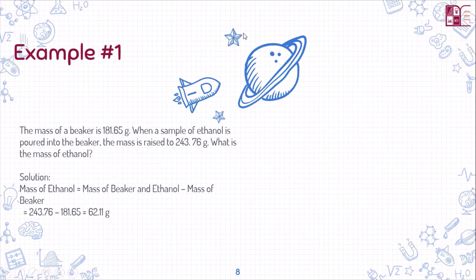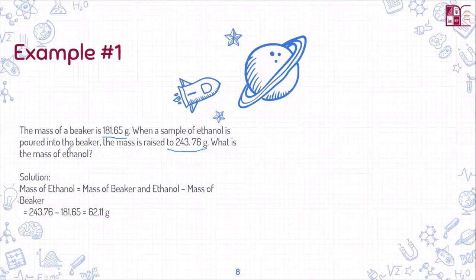Here is an example: the mass of the beaker is 181.65 grams, and when a sample of ethanol is poured into the beaker, the mass rises to 243.76 grams. You have to calculate the mass of the ethanol. This is a basic question — you just subtract the mass of the beaker from the total mass of the beaker plus ethanol to get the mass of ethanol.